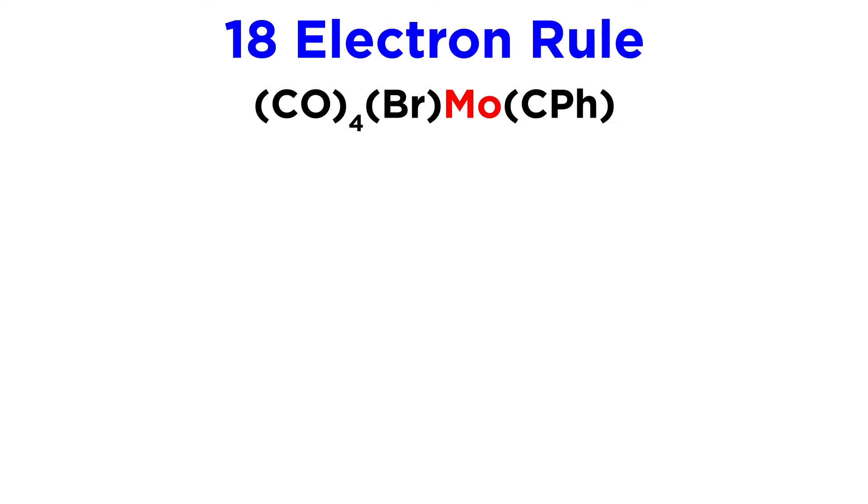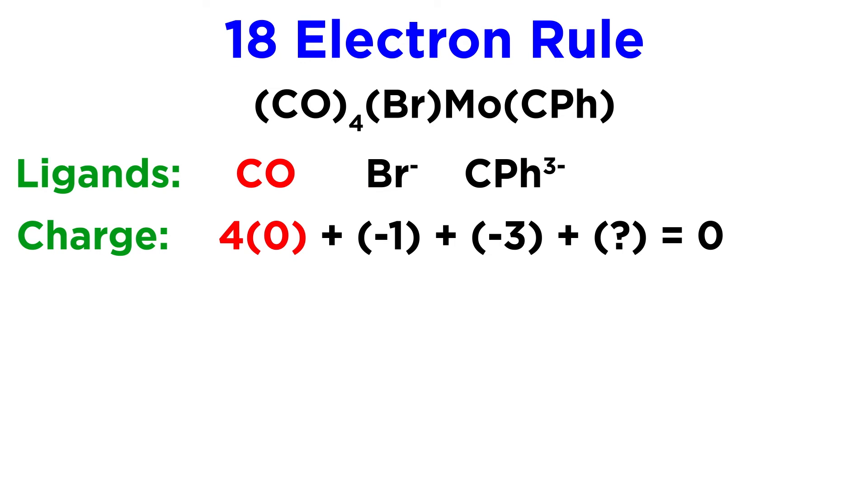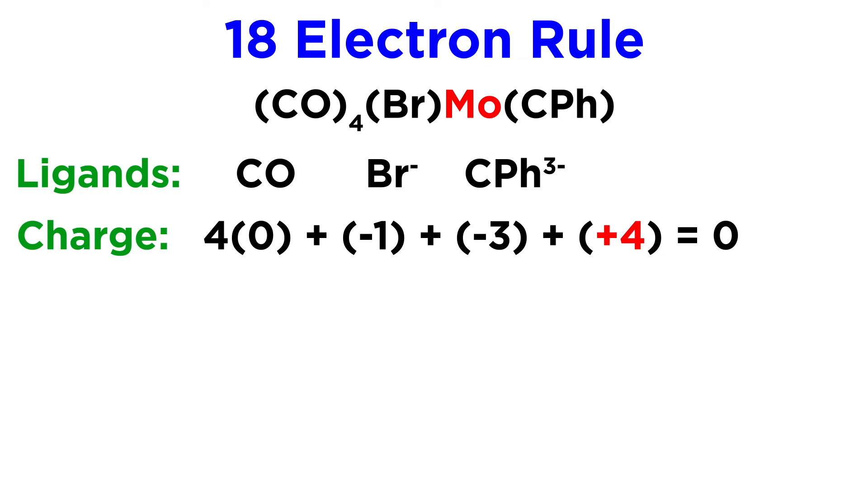Here's just one more molybdenum complex. This one has four carbonyls, one bromide, and one phenylalkylodyne. Once again, the fact that this carbon has only one substituent is what reminds us that it must make three bonds to the metal, so when in doubt, check how many of carbon's bonds are accounted for within the ligand, and the rest must go to the metal. The carbonyls are neutral, the bromide is one minus, and the alkylodyne is three minus, so that's a total of four minus, and the complex is neutral, so molybdenum must be four plus.